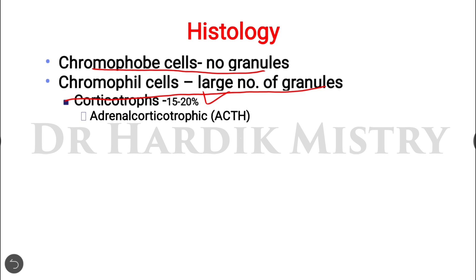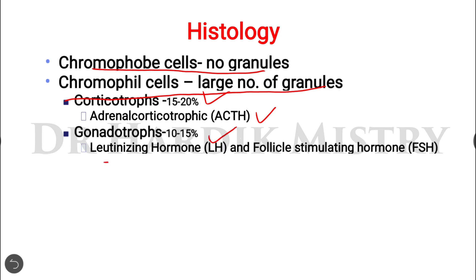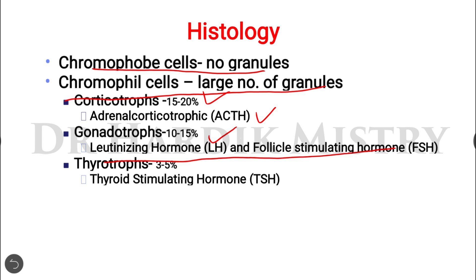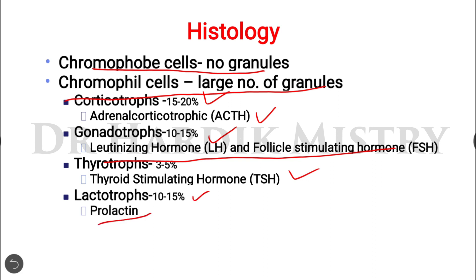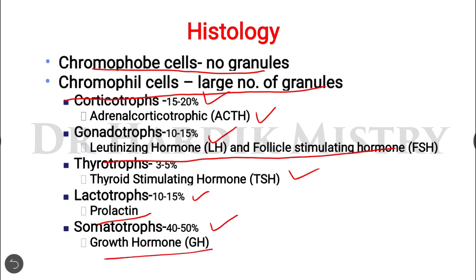The different types of chromophil cells are: corticotropes (15–20% of total cells), which secrete adrenocorticotropic hormone (ACTH); gonadotropes (10–15%), which secrete luteinizing hormone (LH) and follicle stimulating hormone (FSH); thyrotropes (3–5%), which secrete thyroid stimulating hormone (TSH).